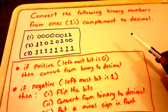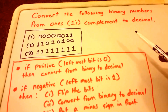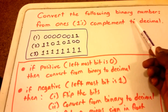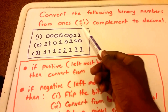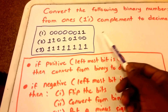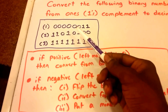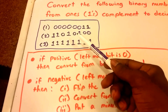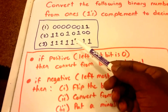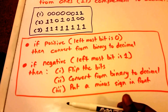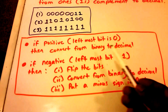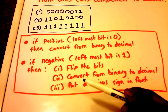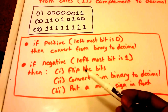Hey guys and welcome to this video on ones complement. What we want to do is convert the following binary numbers from ones complement to decimal. In purple are the three binary numbers we want to convert, and in the orange square are the steps needed to do this conversion.